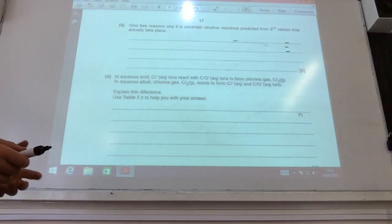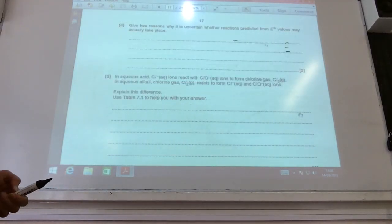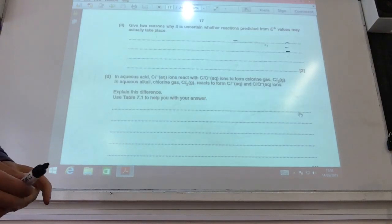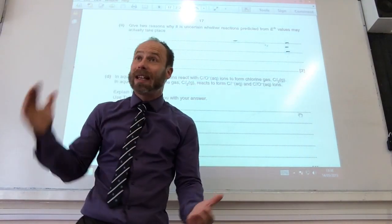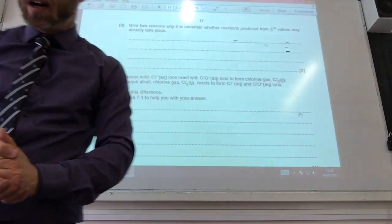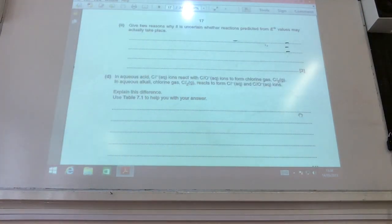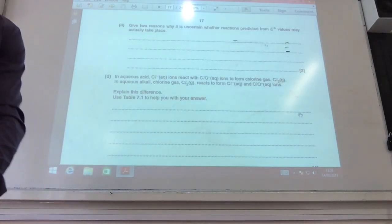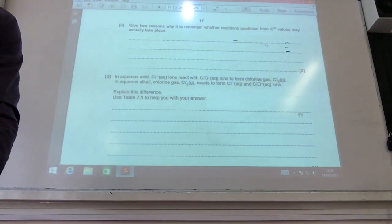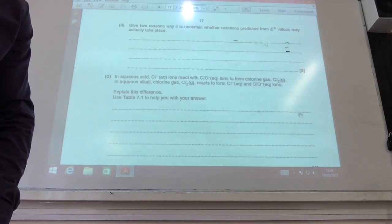So two reasons why it's uncertain. Some of the predictions, reactions predicted will actually take place. One is it tells you nothing about the rate of reaction. The activation energy may be too high. The rate may be extremely slow. And also the conditions may be not standard. The concentrations particularly may not be one mole per decimetre cubed.